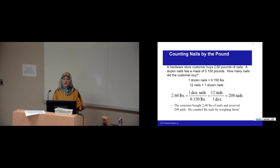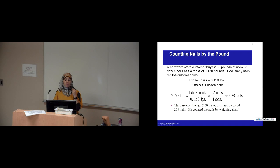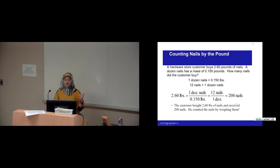The hardware store tells you that one dozen of nails weighs 0.150 pounds, and that one dozen of nails is 12 nails. We start out with our given: 2.6 pounds. You can go from pounds to dozens of nails — the pounds cancel out. But we want the actual number of nails, so we keep going: one dozen is 12 nails. Multiply everything on top, divide on the bottom. That gives 208 nails. So 2.6 pounds of nails is equivalent to 208 nails.